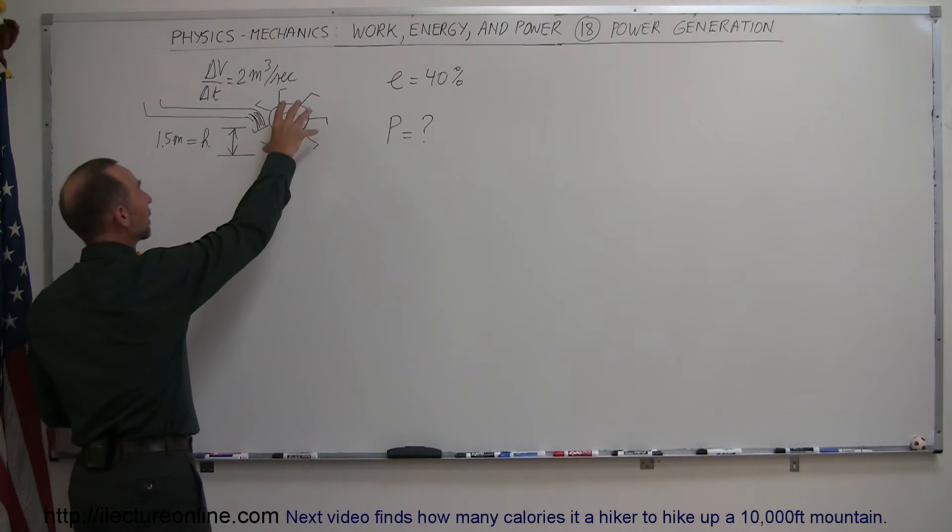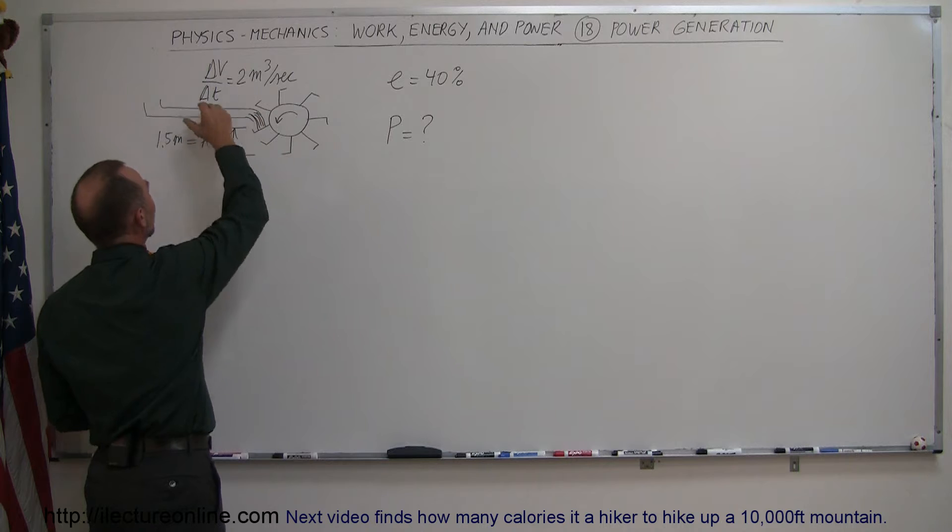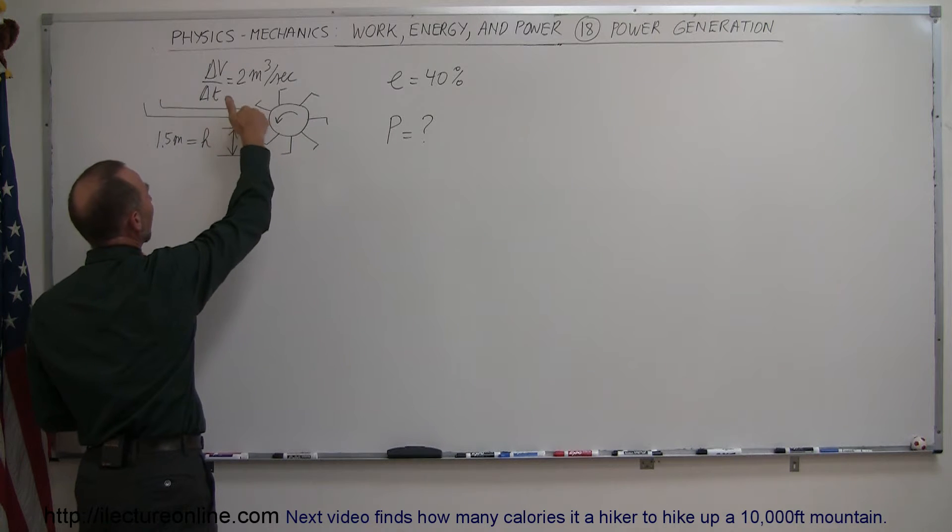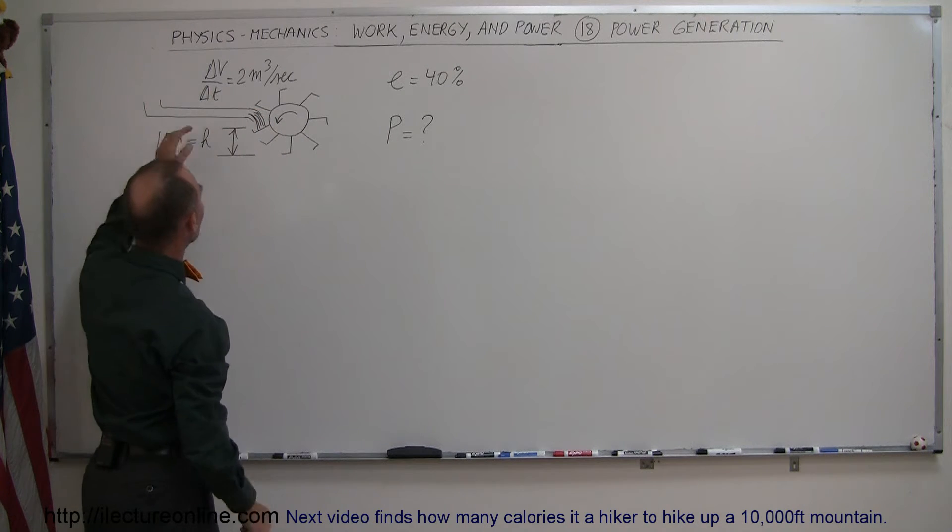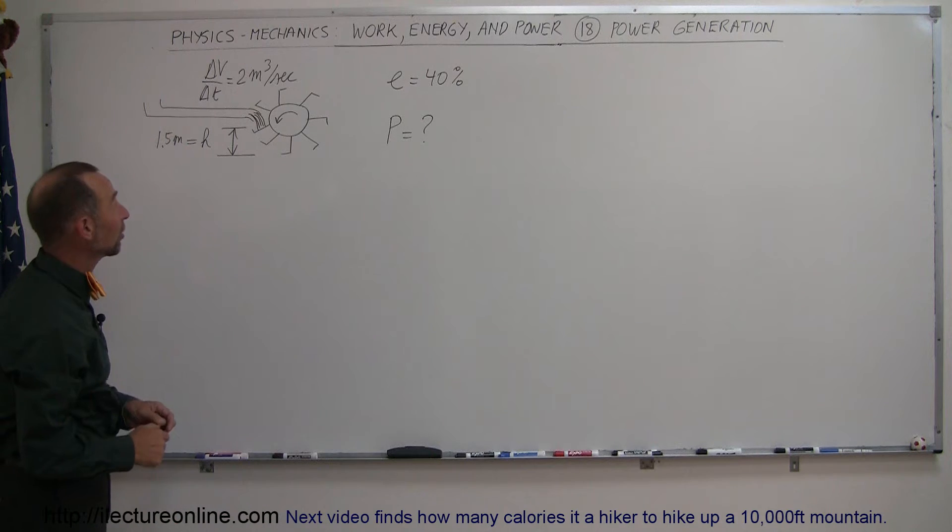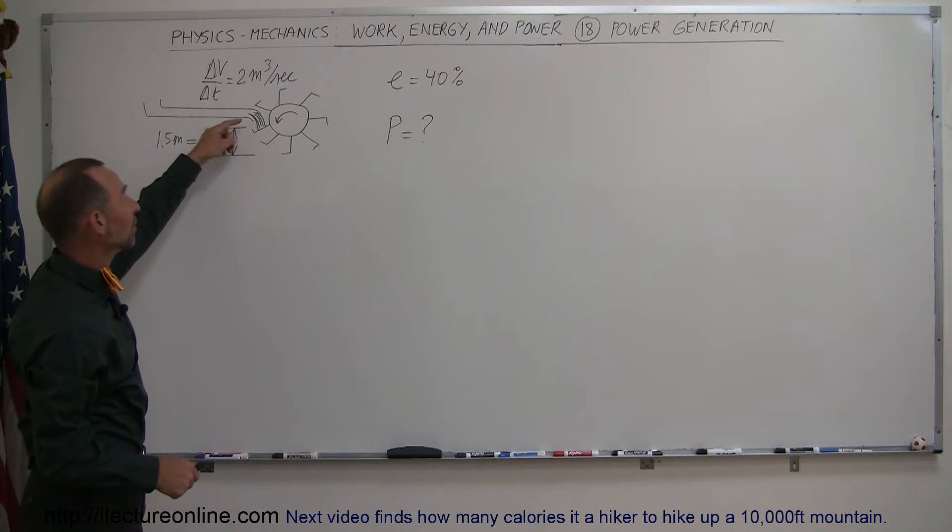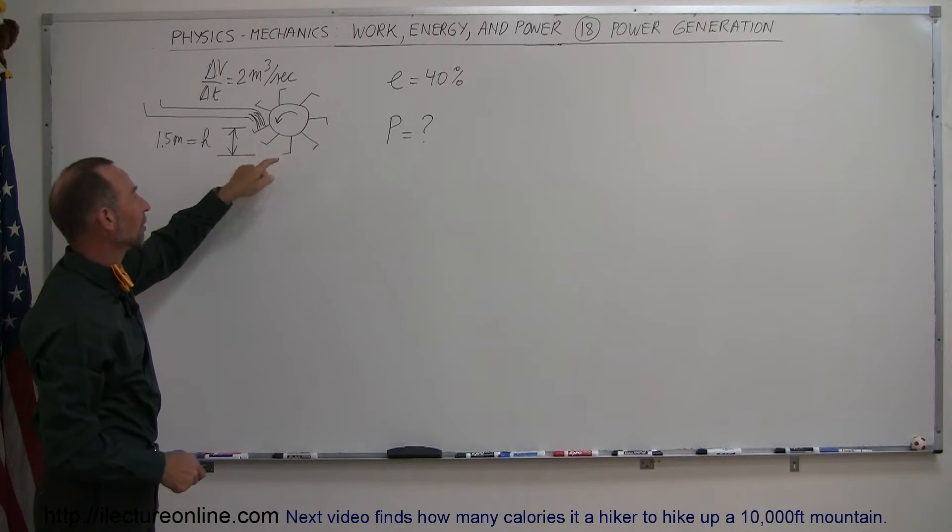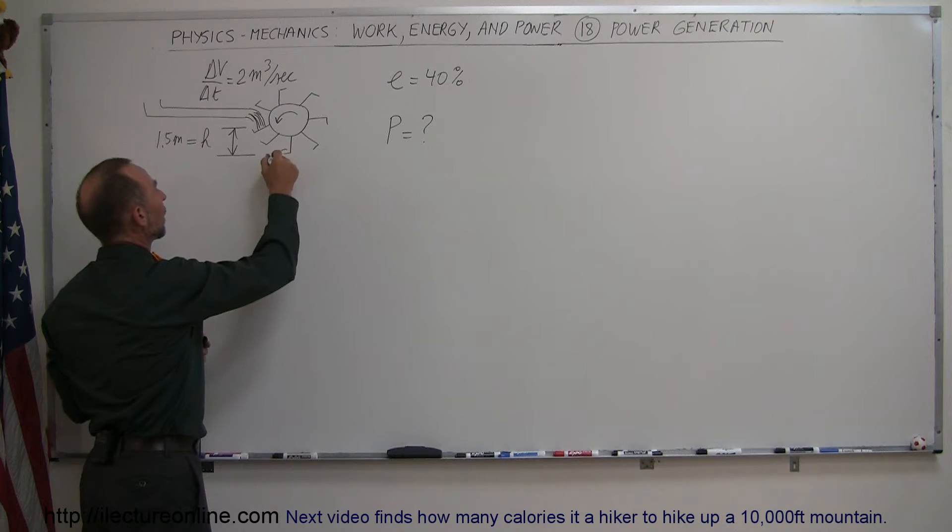So let's say we have a little generator right here. We have these little buckets. We have a pipe with water coming down from the source. Let's say water is coming out of the pipe at a rate of two cubic meters per second. It hits those little buckets and the weight of the water will make the bucket go around and when it gets to the bottom, the water will then run out.